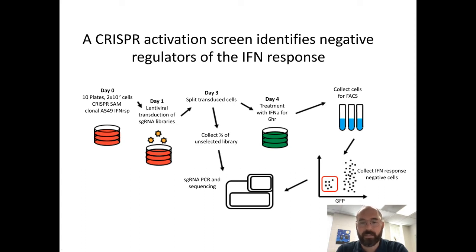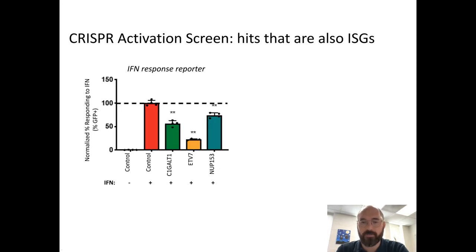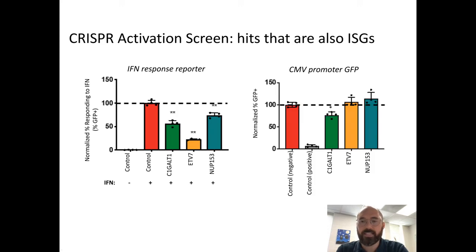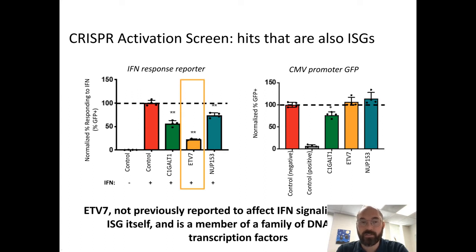After bioinformatic analysis and filtering, we identified three hits: C1, BALT1, ETV7, and NUF153 — each sufficient when overexpressed to decrease the interferon reporter response. At least ETV7 and NUF153 don't affect GFP by itself, making the effect specific for the interferon response. We decided to focus on ETV7: it's known to be an interferon-stimulated gene and a DNA-binding transcription factor, but had no previously known role in the regulation of interferon signaling.